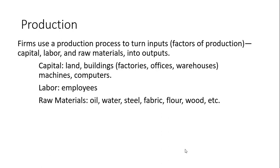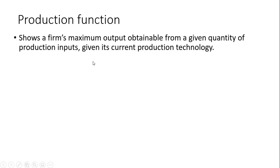Outputs include things like cars, planes, boats, clothing, food, and so on. A production function shows a firm's maximum output obtainable from a given quantity of production inputs, given its current production technology.